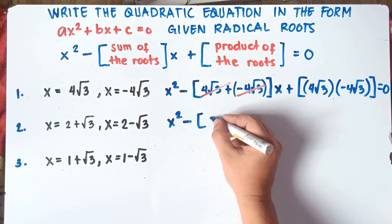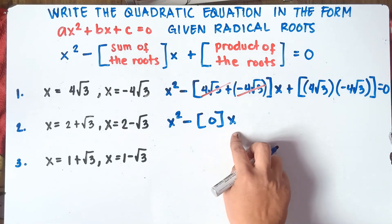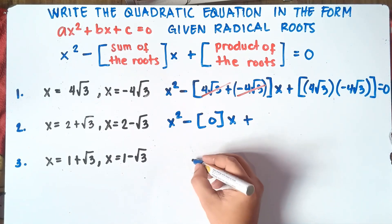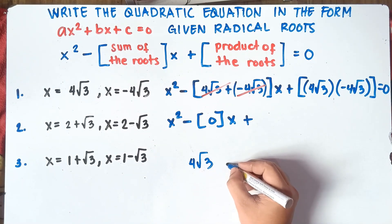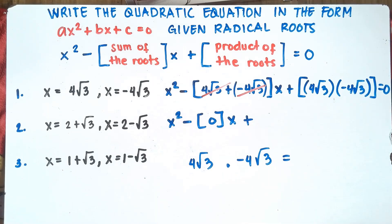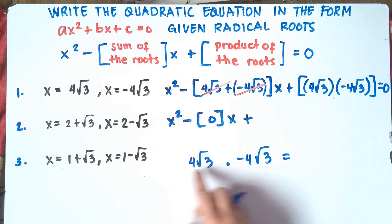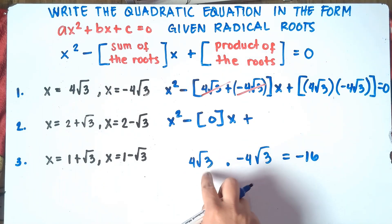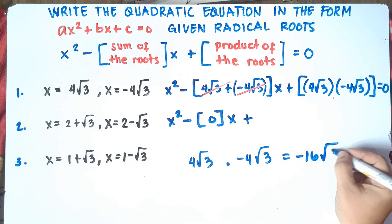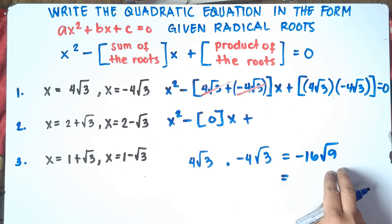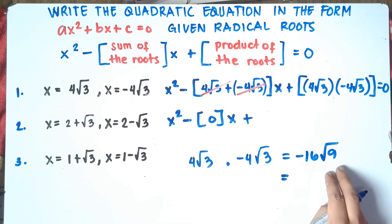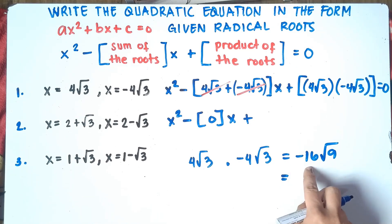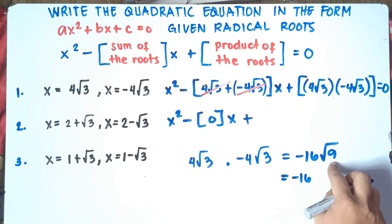So our answer inside the parenthesis is 0, so 0 times x. Then we multiply the product: 4 square root of 3 multiplied by negative 4 square root of 3. Multiply outside the numbers: 4 times negative 4, that's negative 16. Then square root of 3 times square root of 3, that would be square root of 9. We can still simplify — the square root of 9 is 3. So copy negative 16, and the square root of 9 is 3. Put it outside the radical sign, then multiply by 16.